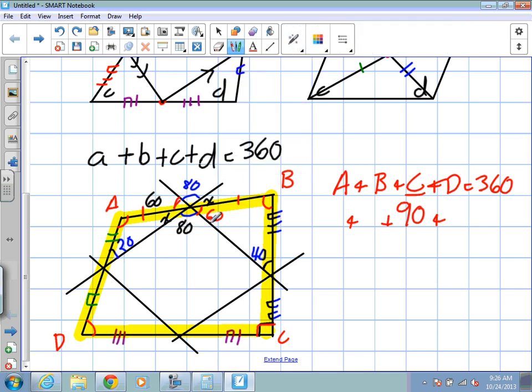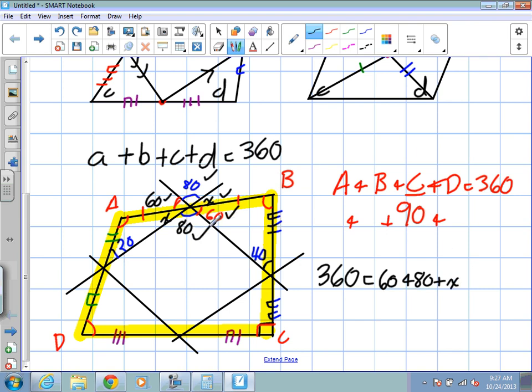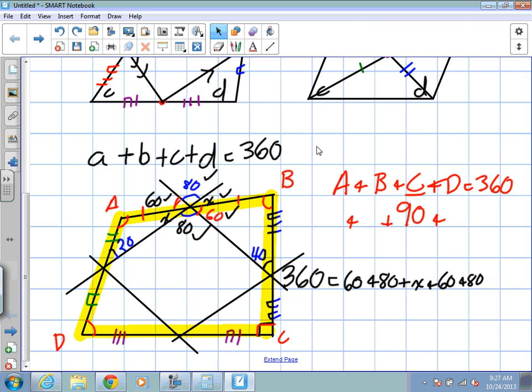If we add this entire circle or this rotation together, we know we're going to get 360 degrees. So I'm going to take 360. It is equal to, and I'm going to put all of these values into an equation. So I'm going to take 60 and 80. So it's equal to 60 plus 80, plus X plus 60 and 80 again. And plus X.